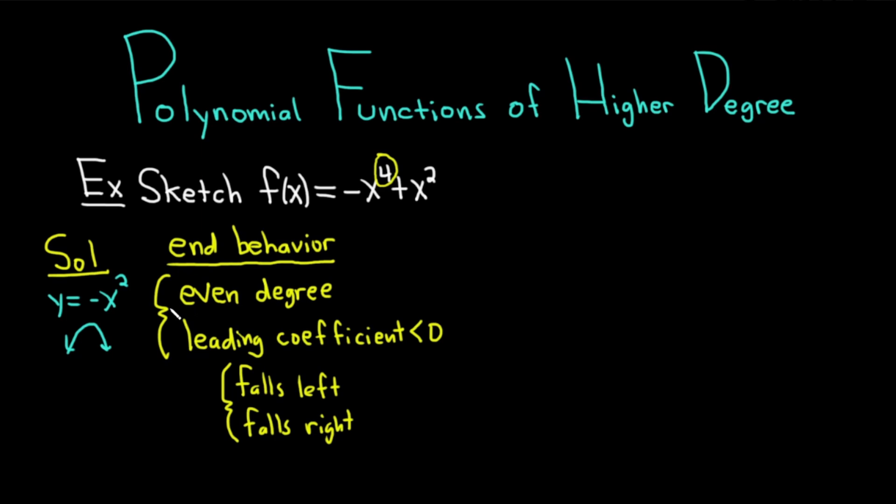Whenever you're doing these end behavior problems, if you don't want to have to memorize everything, just write down what you know. For example, in this case, even degree, negative leading coefficient. And then just think about the simplest function you know that has those characteristics. And the end behavior of that function will be the same. Now that we've got the end behavior down, let's find the intercepts.